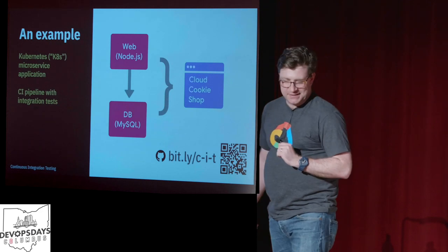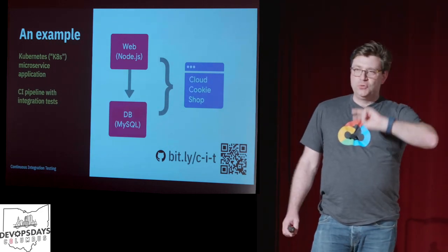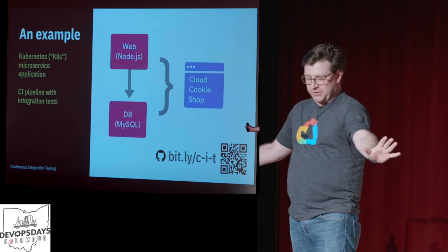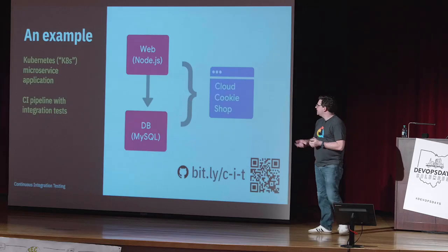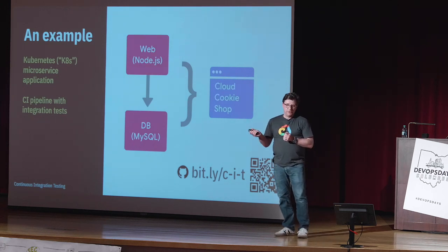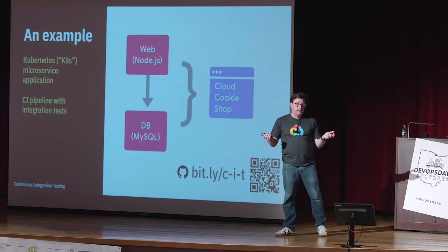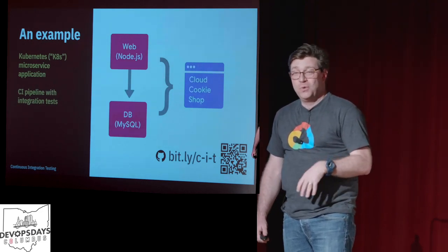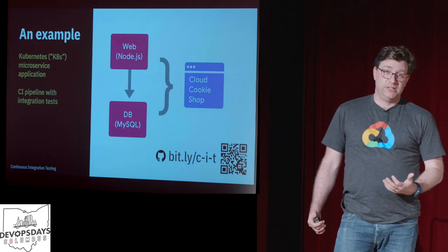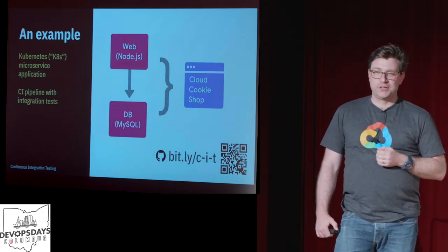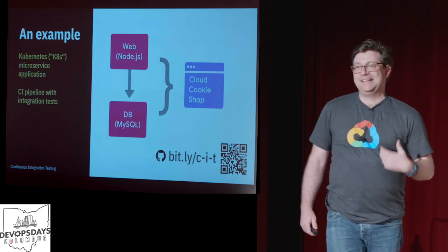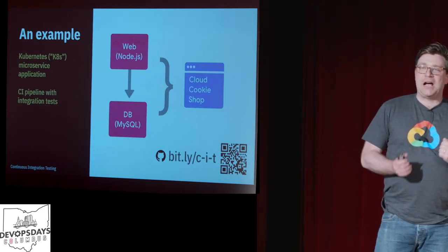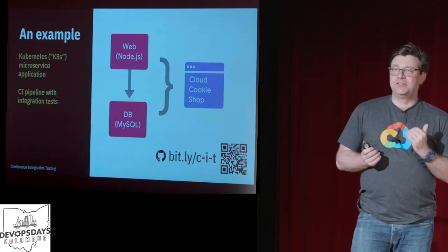Here's our microservices example. This is an application with two microservices — but we all know the only numbers are zero, one, and infinity, so this is an application with infinite microservices. It's a cookie store with two layers. Each layer can be spun up and tested individually. But if you spin up the web layer without the database, you have an empty storefront with no inventory, no cookies. If you spin up the database without the front end, you have inventory you can only access through SQL queries — not a great user experience. We want to give cookies to everyone.